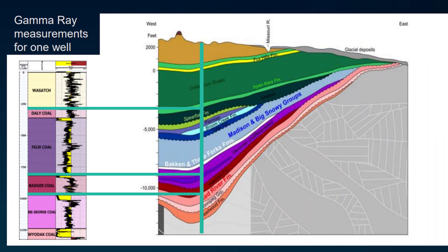Well logs measure formation properties like gamma radiation, resistivity, and density along depth intervals. Manual interpretation is slow and varies by geologists, while automation offers faster, more consistent, and scalable modeling.